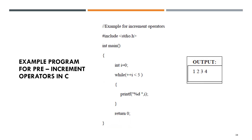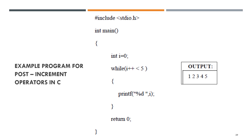Next, an example of a program using pre-increment operators, where the operator is placed before the variable. The program displays n=1 until n=4. Next, the post-increment operator, where the operator is placed after the variable i. The output displays n=1 until n=5.